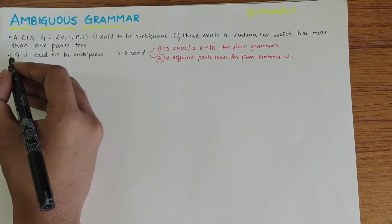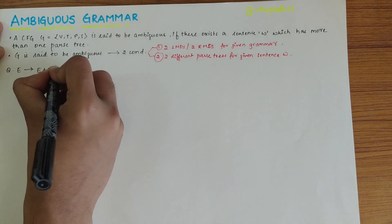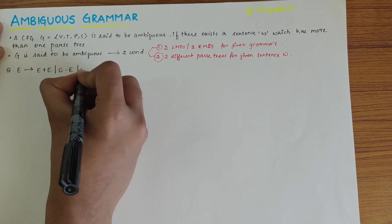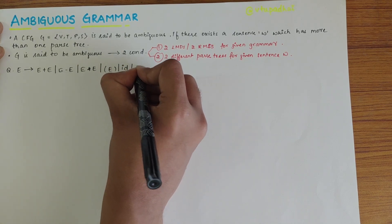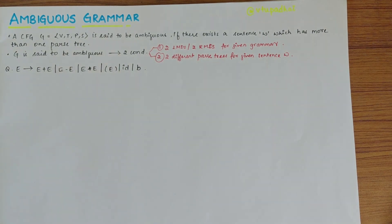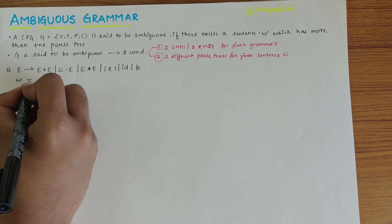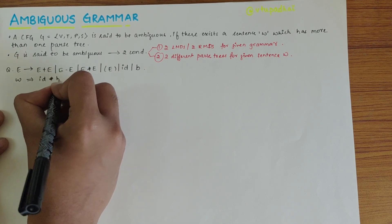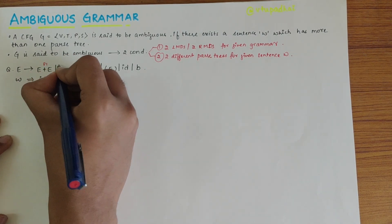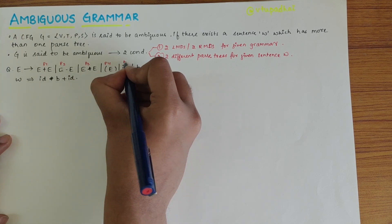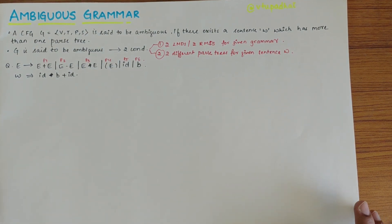Let's consider a question. We have the production: E derives E+E | E-E | E*E | (E) | ID | B. The sentence w we require is ID*B+ID. Let's label these productions as P1, P2, P3, P4, P5, and P6.